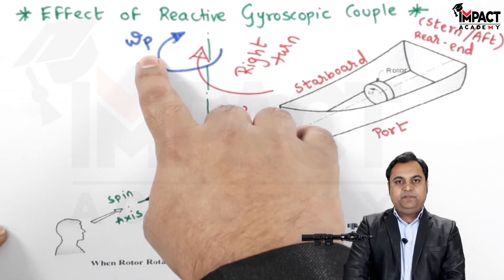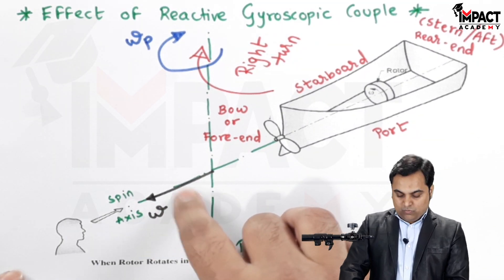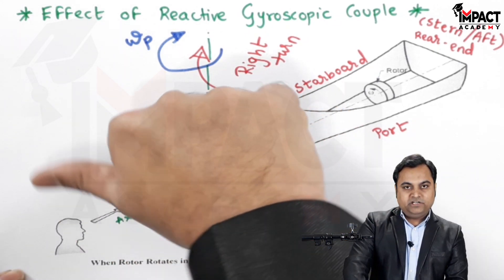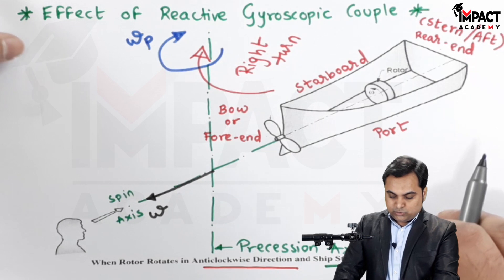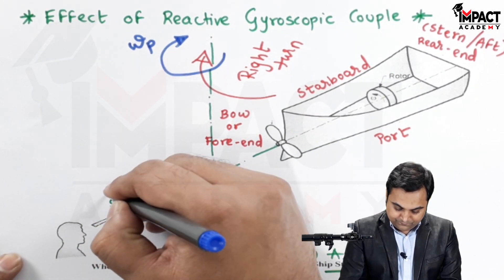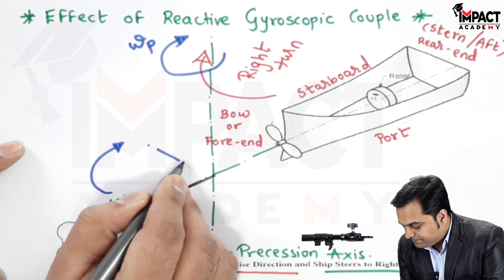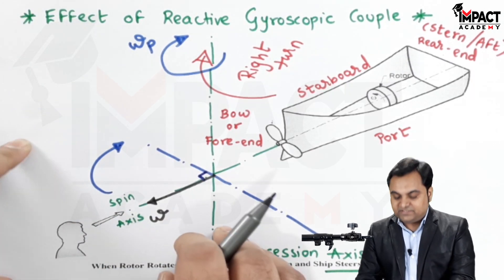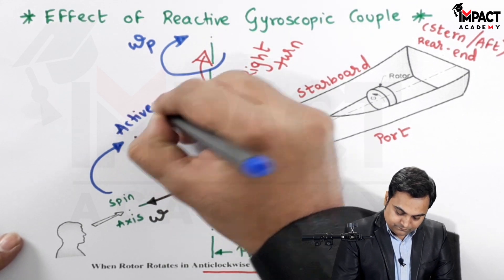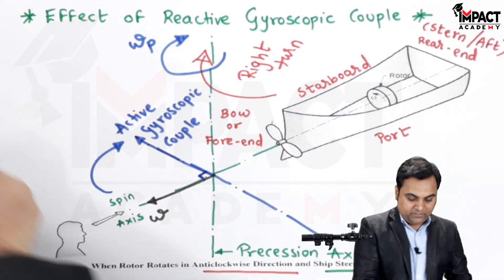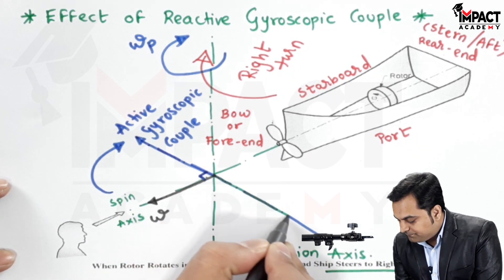Omega_p is also denoted with a vector. The spin axis — and thus omega — will be tilted 90 degrees in the direction of omega_p. Since omega_p is rotating clockwise when viewed from the top, we turn omega clockwise by 90 degrees. This gives us the active gyroscopic couple acting in that plane.